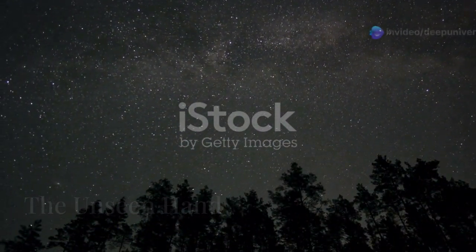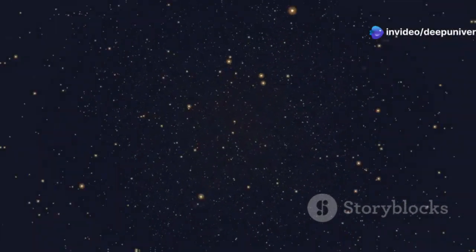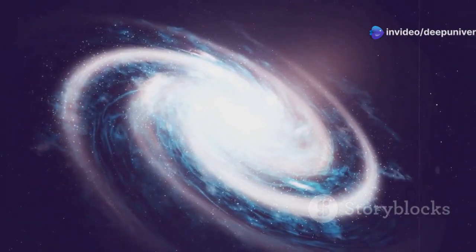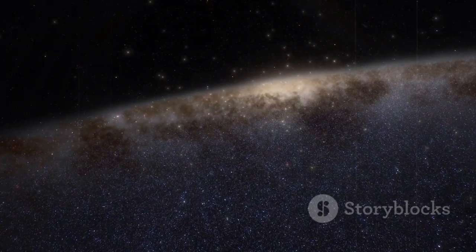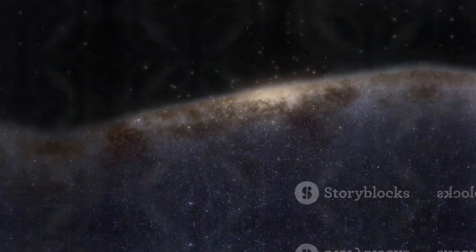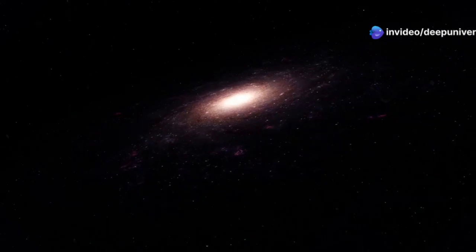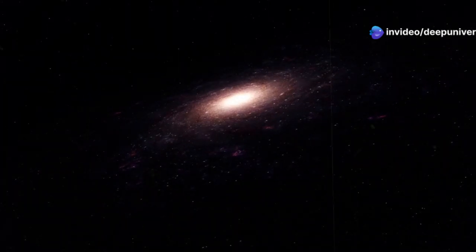The unseen hand. Dark matter is a mysterious substance that does not interact with light. We can't see it directly. Yet we know it exists because of its gravitational effects on visible matter. Dark matter makes up a significant portion of the mass of Andromeda. It plays a crucial role in the galaxy's structure and dynamics. Without dark matter, galaxies like Andromeda would fly apart.